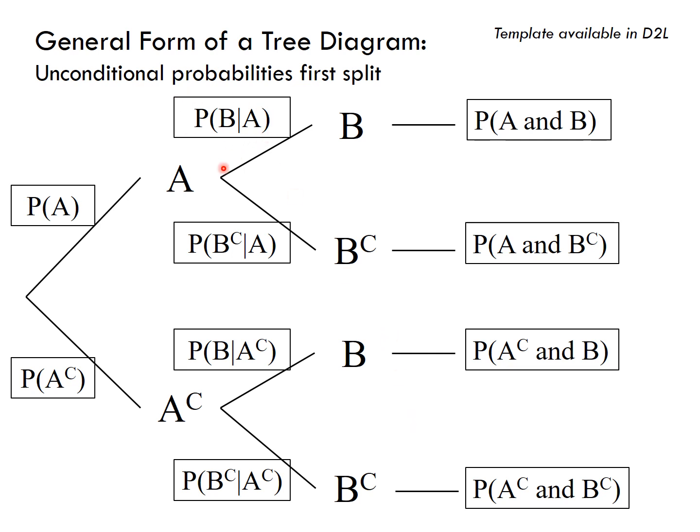But if I need to reverse that and find the probability of A given B, that seems to be a bit more difficult. It can still be done though.